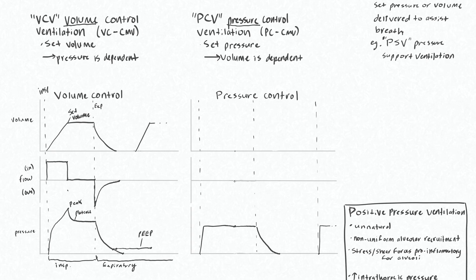This peak pressure occurs as you squeeze the last little bit of volume into the lungs and you have the last little bit of flow through the ventilator. Then your flow stops and you have the same set volume for this hold period, but the plateau pressures are lower than the peak pressure. That's because your dynamic compliance is different than your static compliance — when you have airflow moving in or out of the lungs, compliance is different than when you have no airflow.